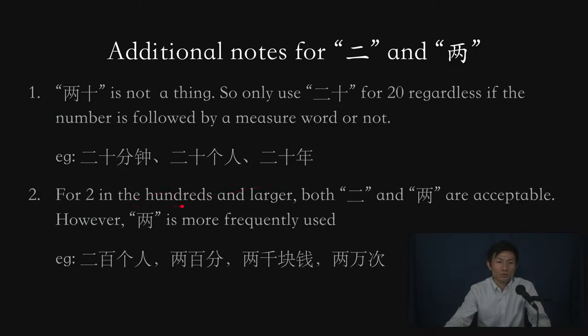And for larger numbers, for twos in the hundreds and maybe even larger, both 二 and 两 are acceptable. For the most part, 两百, 二百, it will be the same thing. 两百个人, you can also say 二百个人. 两百分, you can say 二百分.